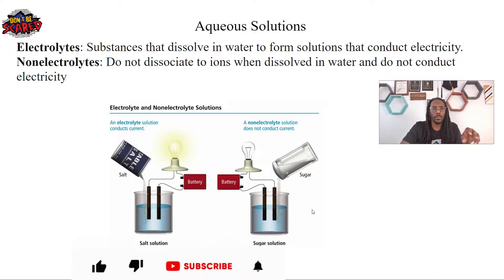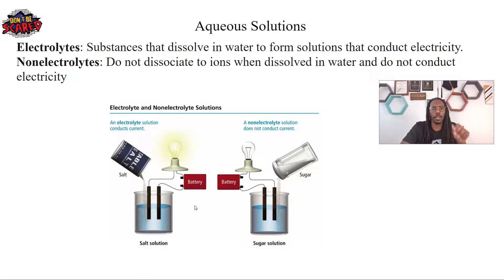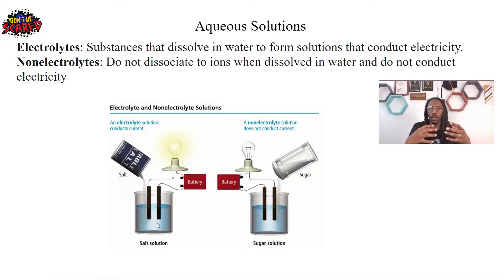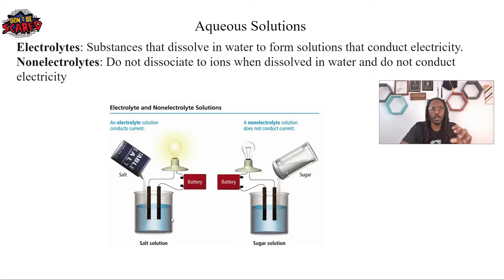Let's look at an example. With an electrolyte solution, electrolytes conduct electricity. Why, Dr. J, can they conduct electricity? It's all because they dissociate to ions. So when we put salt in water, the salt solution isn't just solid salt — this is actually sodium ions and chlorine ions floating in that water. Since we have these ions floating, those ions with their partial charges are able to conduct electricity. So an electrolyte solution has ions, and because it has ions, it's able to conduct electricity.